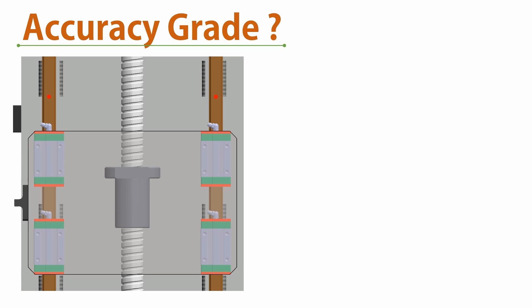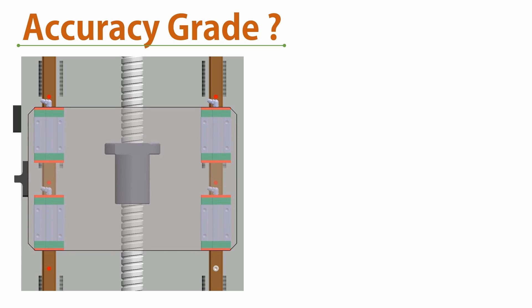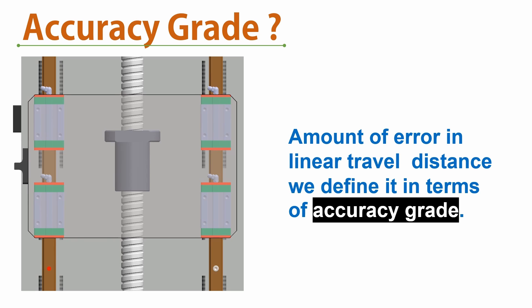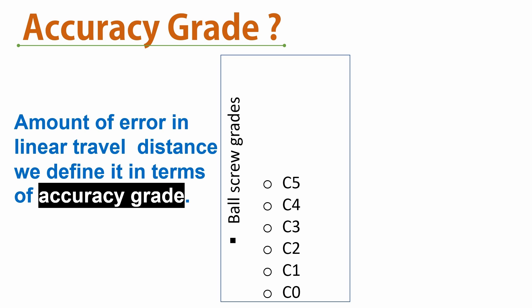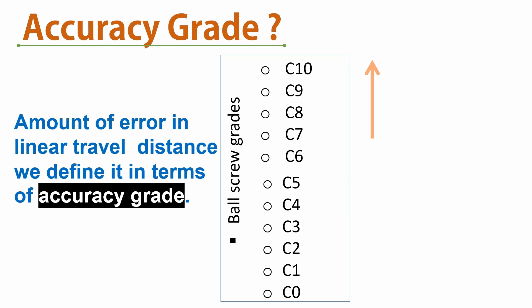The first term is accuracy grade. The screw rotates and the nut travels, and the amount of error in that travel can be defined in terms of accuracy grade. Grades are divided from C0 to C10. As we go to lower grades, we get more precise accuracy. As we go to higher grades, we get less positional accuracy.